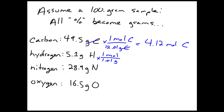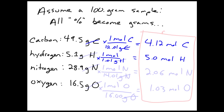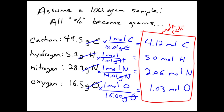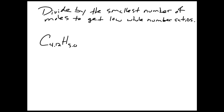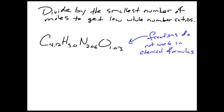We take those moles and treat them as ratios of all our elements. We've got carbon, hydrogen, nitrogen, and oxygen in their decimal fractional mole ratio form. These mole ratios can be dropped right in as subscripts in our chemical formula — that's how I like to represent them because we can see our destination. However, these are fractions, and fractions do not work in chemical formulas, which is why we need to find the lowest whole number ratio.